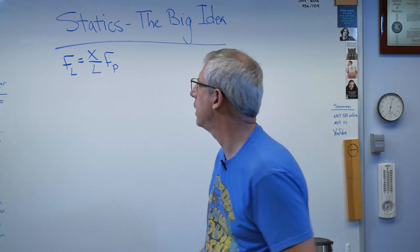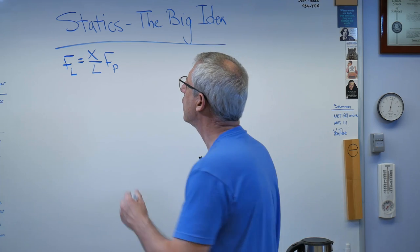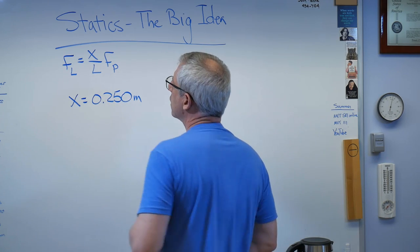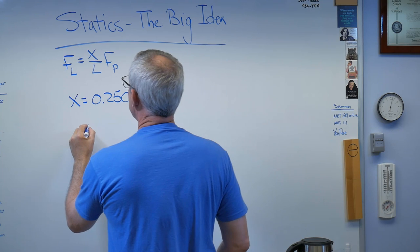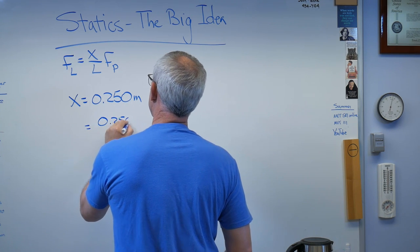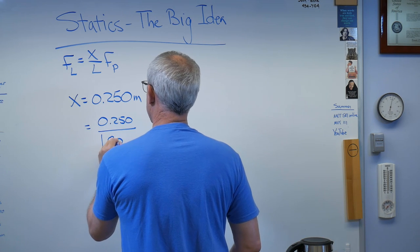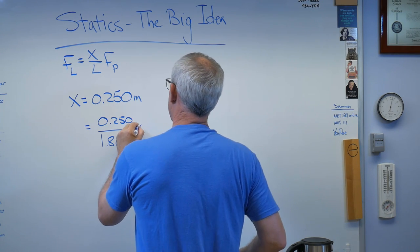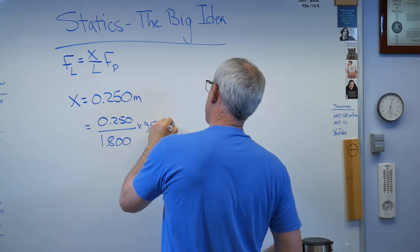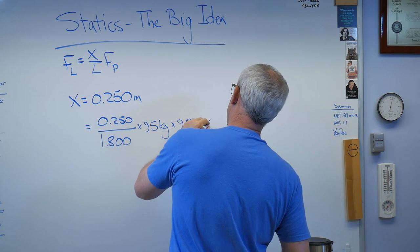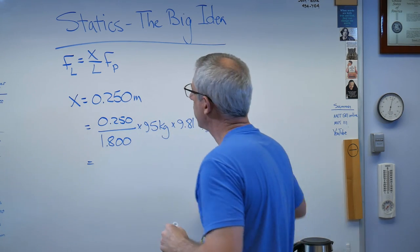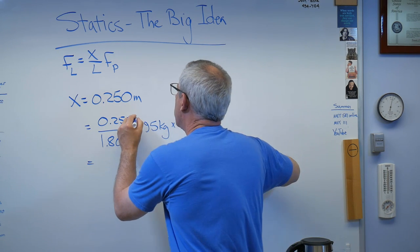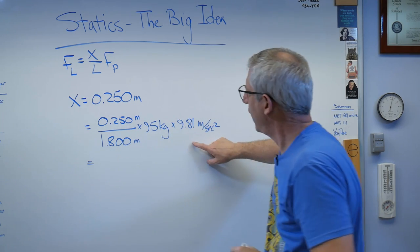I don't know how far over I was sitting. Let's say x is a quarter of a meter, about the right answer. Let's put some numbers in here: 0.250 over 1.80 times 95 kilograms times 9.81 meters per second squared.